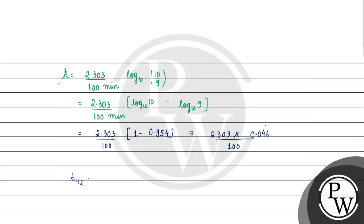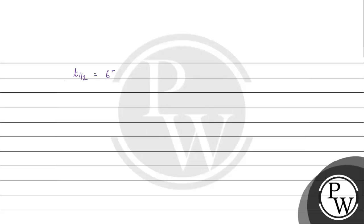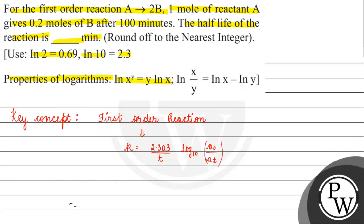If we take T half, then T half is basically equal to 0.693 divided by K. Substituting K, we get 0.693 divided by (2.303 times 0.046 divided by 100), which equals 69.3 divided by (2.303 times 0.046). T half will be approximately 654.15 minutes. So the correct answer, rounding off, is 654 minutes. I hope you understood it well — thank you and all the best.